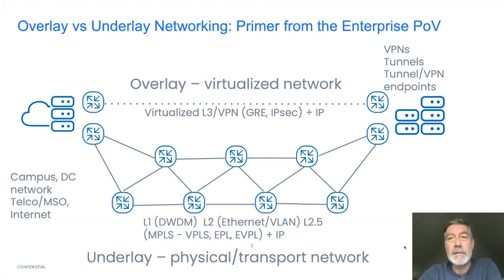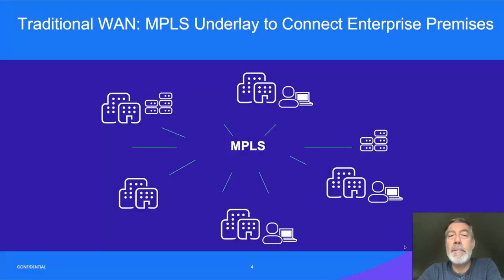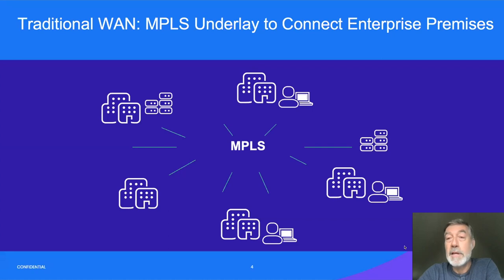The overlay relies on the underlay, but it can't influence the path of the packet. The second distinction is in performance. The underlay essentially processes packets at line speed, and we're talking terabits per second to generate high throughput. An overlay can be offloaded to a hardware accelerator, but it can't begin to approach the performance of the underlay. In traditional enterprise WAN, MPLS was used to create the underlay that connects the enterprise together, and the architecture was literally designed to create the impression that everything was connected to everything.